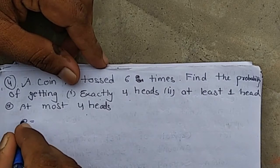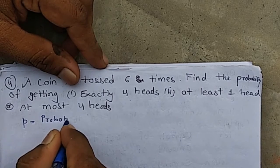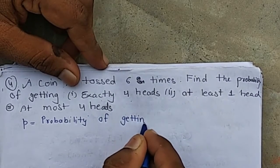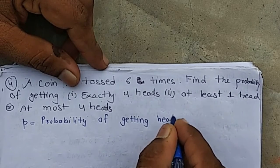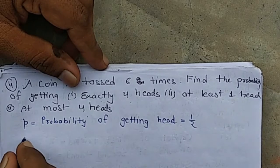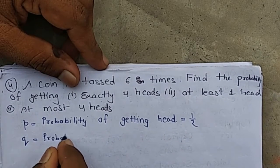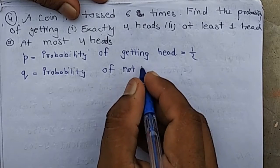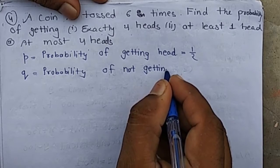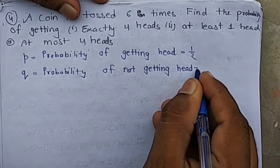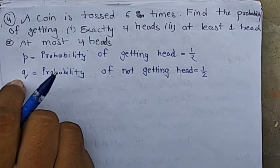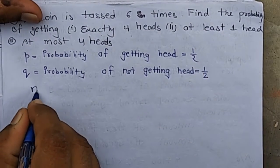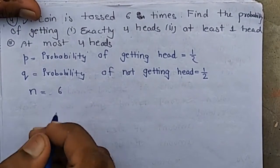Firstly, we let P be the probability of success, which is the probability of getting a head, equal to 1/2. The probability of not getting a head is considered as failure, so Q = 1/2. The number of trials n = 6, since the coin is tossed 6 times.